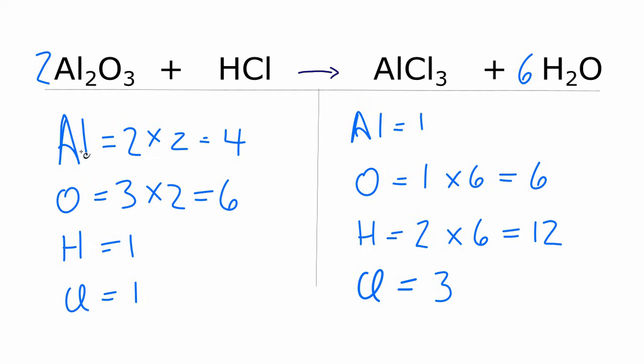I might as well try to fix my aluminums, because I have 4 here and only 1 here, so I could just put a coefficient of 4 in front of the aluminum chloride, and the aluminums have 1 times 4. Then I'll have 4 of those, so the aluminums are balanced.